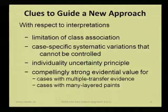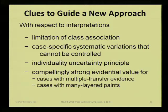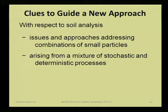Along with that, you've got compellingly strong evidential value. When we see cases like David Floor presented, you don't need statistics. You've got multiple transfer evidence — it's as compelling as it could possibly be in terms of decision-making and proof. And you've got cases with many layered paints where they're not correlated for any reason at all. So we have the ability to get to extremely high probative value, and we're not limited to class association when we look at many particles together. We get there the same way others do.